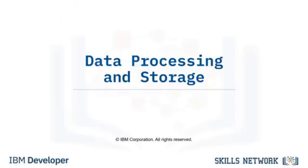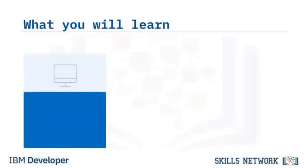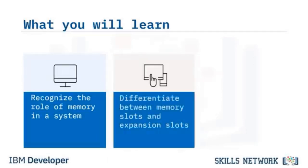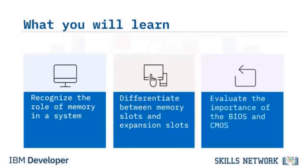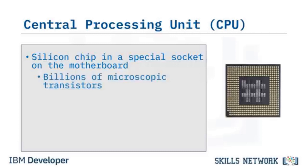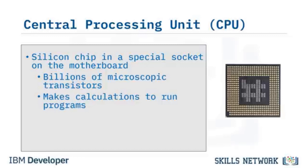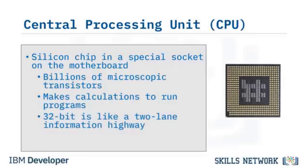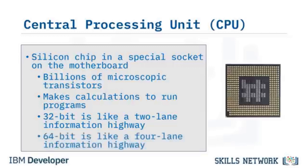Welcome to Data Processing and Storage. After watching this video, you will be able to recognize the role of memory in a system, differentiate between memory slots and expansion slots, and evaluate the importance of the BIOS and CMOS. The CPU is a silicon chip in a special socket on the motherboard. CPUs contain billions of microscopic transistors on a single chip. A 32-bit CPU is a processor architecture that can transfer 32 bits of data per clock cycle — think of it as a two-lane information highway.